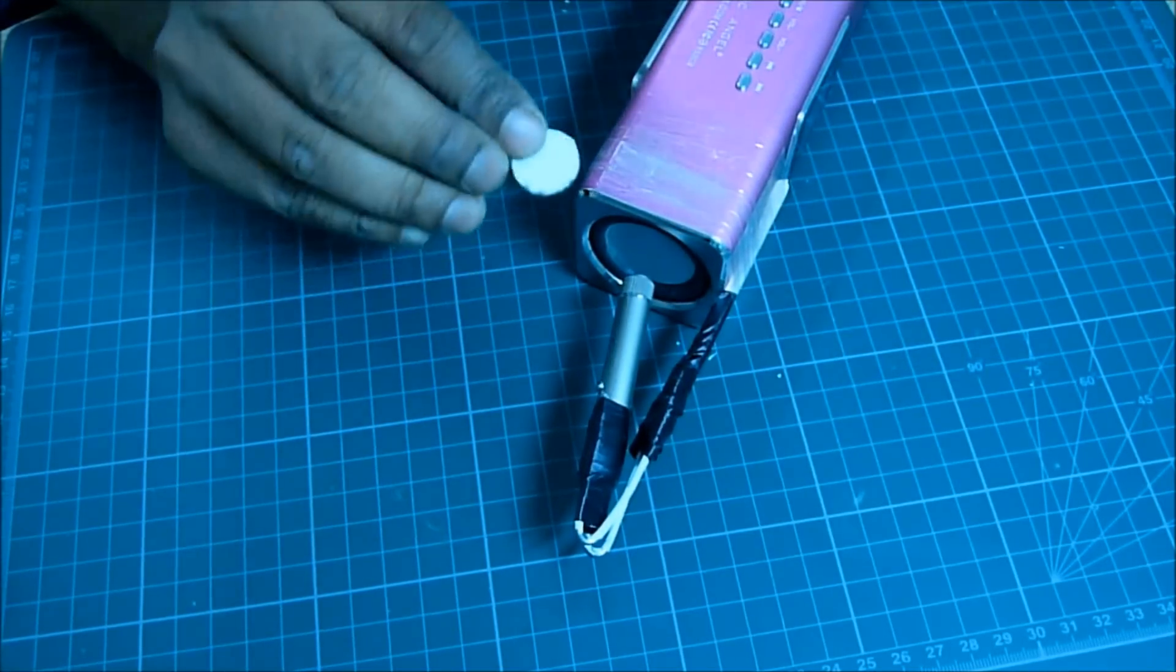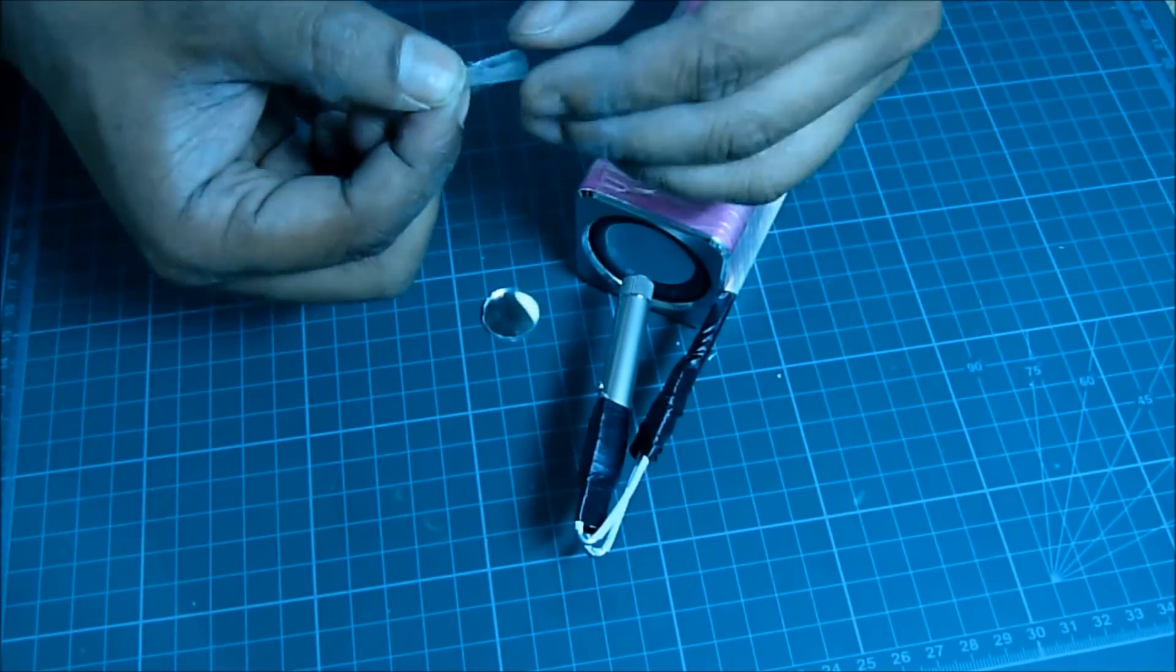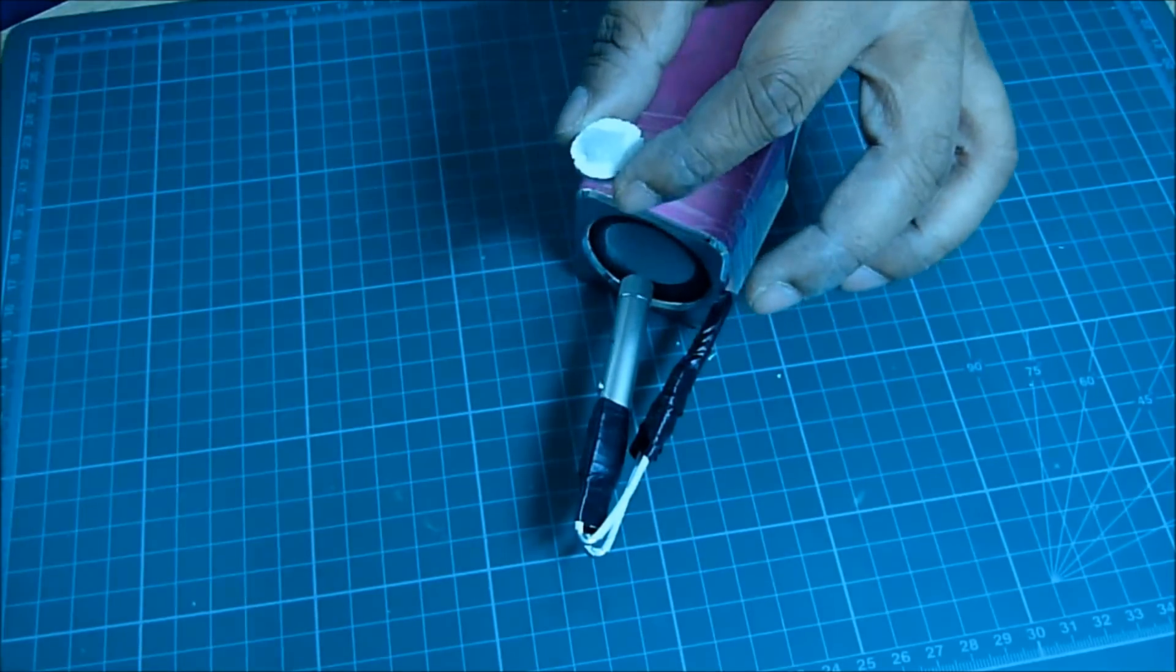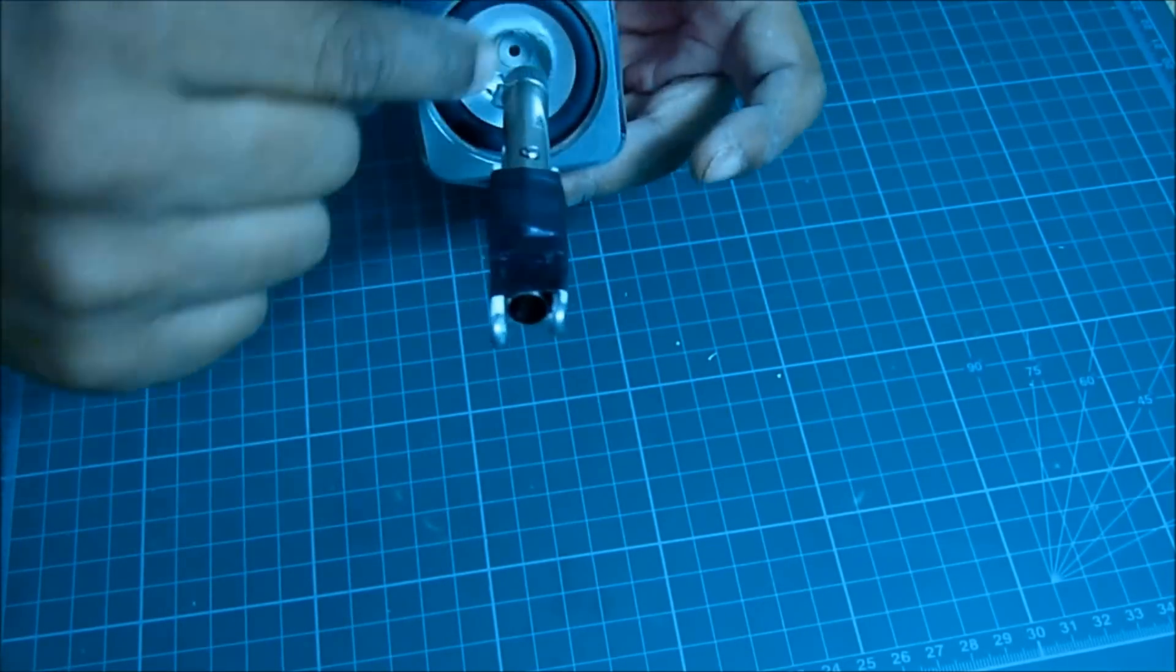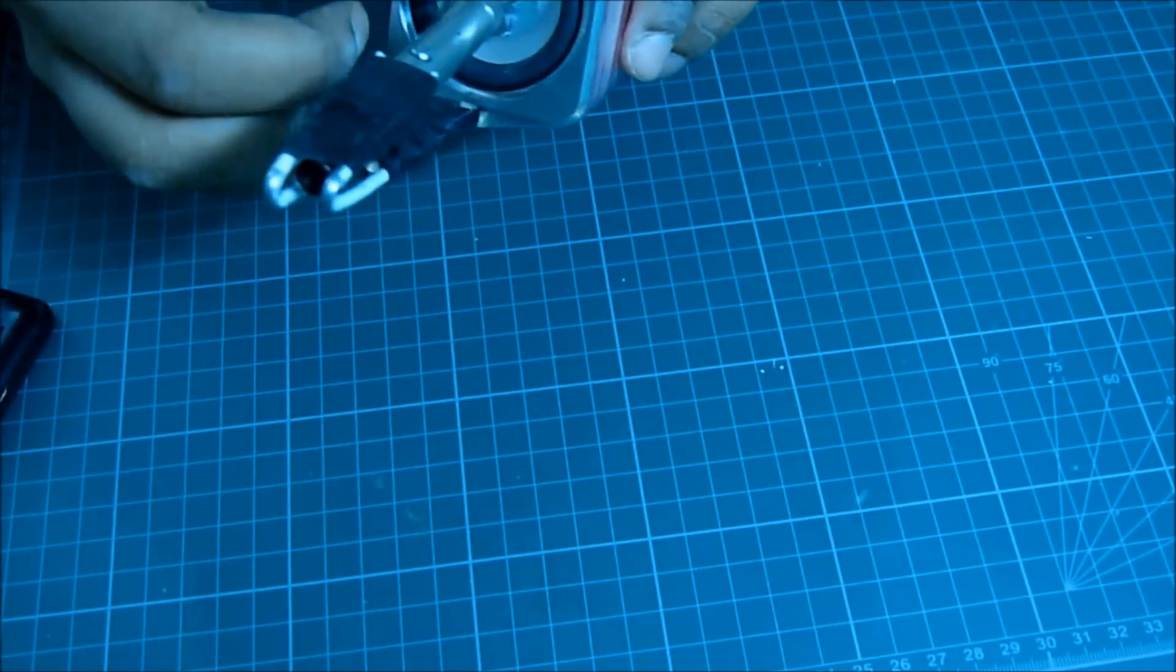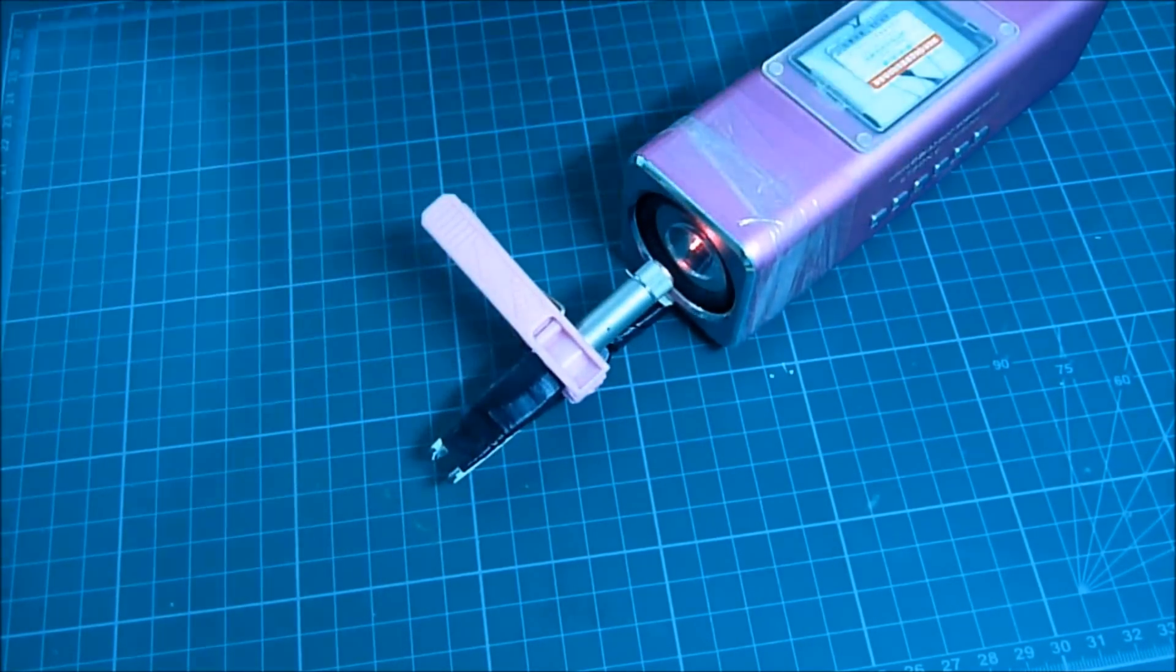Now we need a small mirror like this. Use cello tape, fold it, and stick it on top of the speaker. Now the laser will get reflected from the speaker.